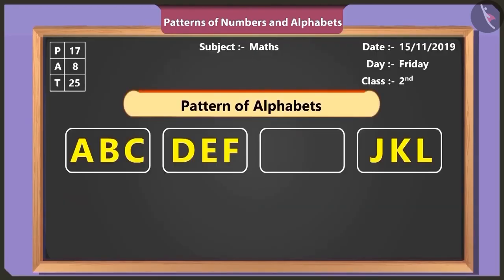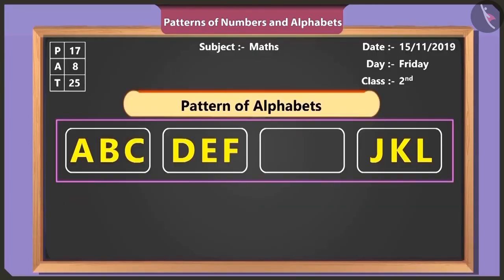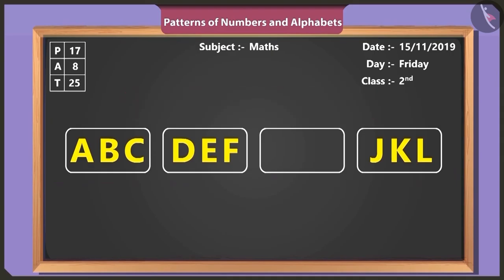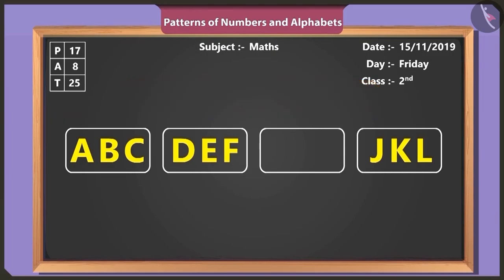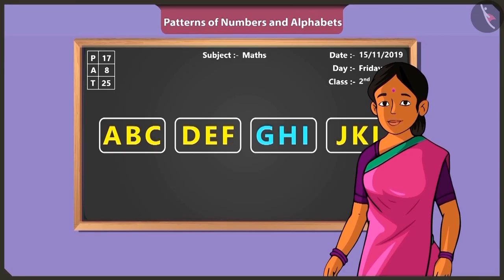Now solve this puzzle made of alphabet pattern. This pattern is made of English alphabets A, B, C, D. And yes, each term of this pattern has three alphabets. So here following A, B, C and D, E, F, the next term will be G, H, I. Because it is followed by J, K, L. Well done, Binny.